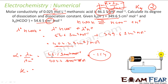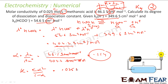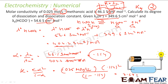Ka can be found from Ka = cα² / (1 − α). At equilibrium, undissociated acid = c(1 − α), and [CH₃COO⁻] = [H⁺] = cα. So Ka = cα²/(1 − α). With c = 0.025 mol/L and α = 0.114: Ka = 0.025 × (0.114)² / (1 − 0.114) = 3.67 × 10⁻⁴ mol/L.